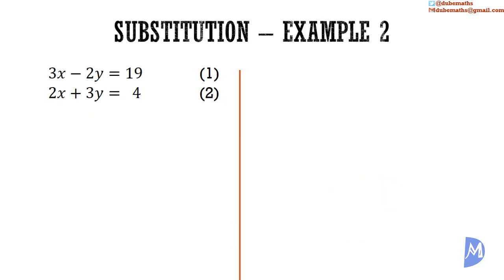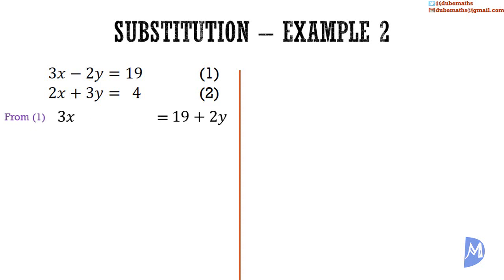Example 2. 3x minus 2y is equal to 19 — equation 1 — and 2x plus 3y is equal to 4 — equation 2. We'll make x the subject of the formula in equation 1. From equation 1, we add 2y to both sides to get 3x is equal to 19 plus 2y. Now we divide both sides by 3, and the 3s cancel to leave x, giving x is equal to (19 plus 2y) over 3. Now we substitute this in equation 2.